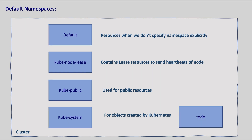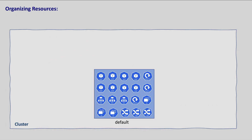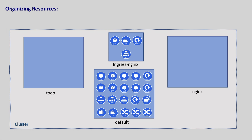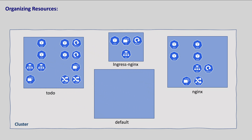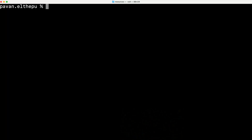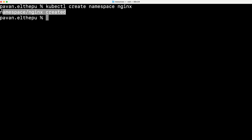Now let's look at Kubernetes namespaces in action. This is the state of our cluster — we have the resources related to nginx and to-do applications in the same namespace, and also the nginx ingress controller resources. Let's create two namespaces: nginx and to-do. We will move all the resources related to nginx into the nginx namespace. Namespaces can be created in two ways. The first approach is using kubectl: `kubectl create namespace nginx`. Our namespace is created.